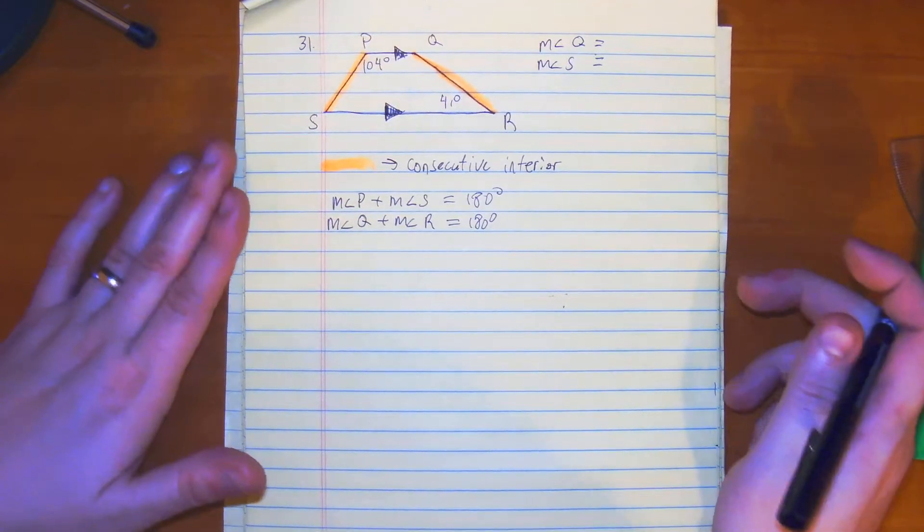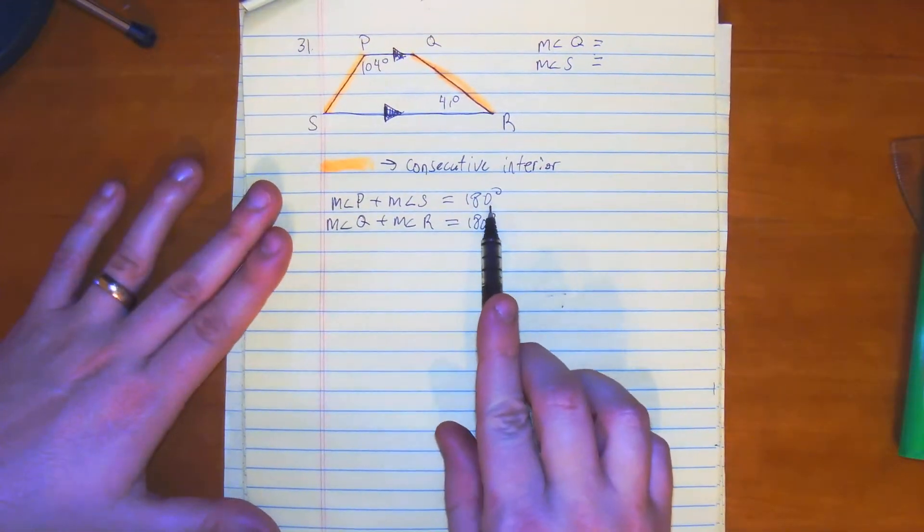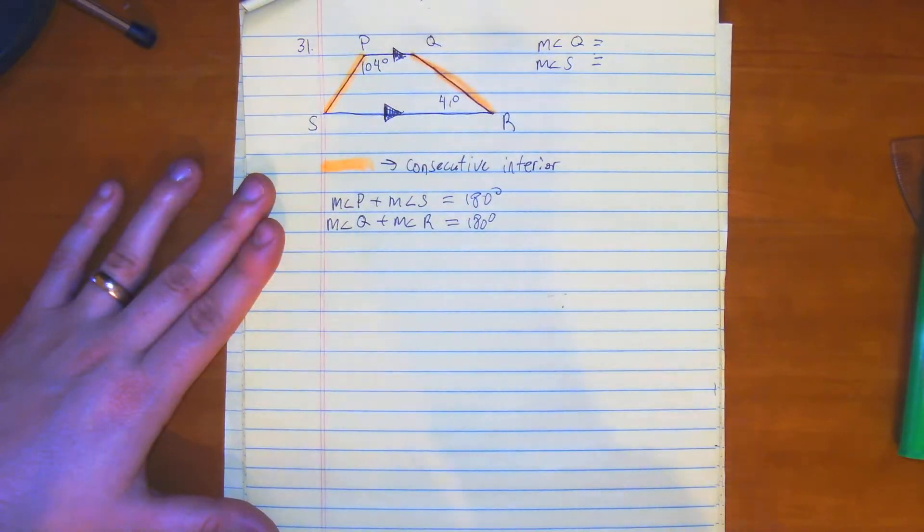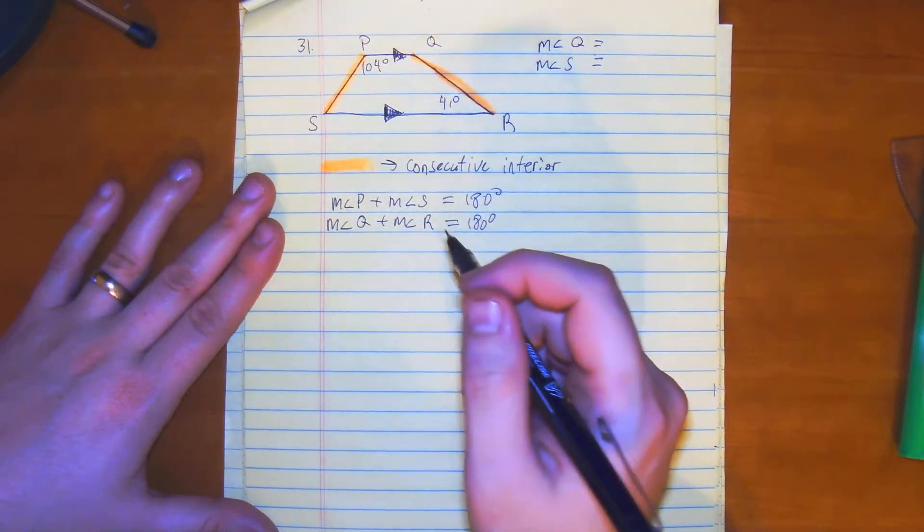So to make a long story short, if we know the angle of P, then we can find S. If we know R, we can find Q. So we're going to first find the measure of S.